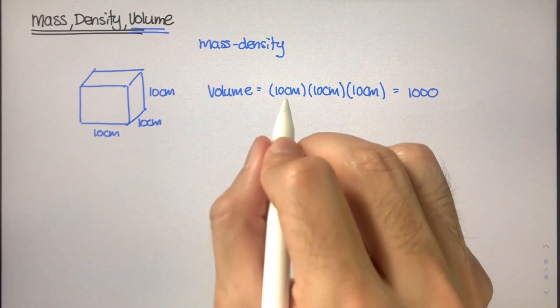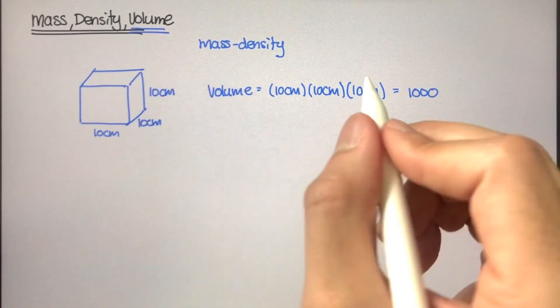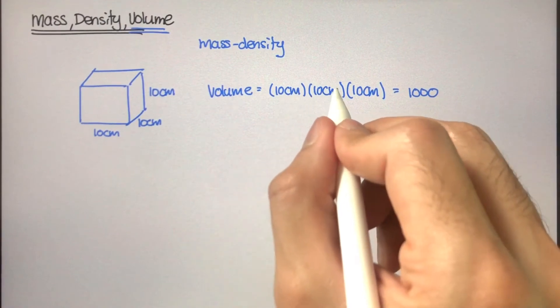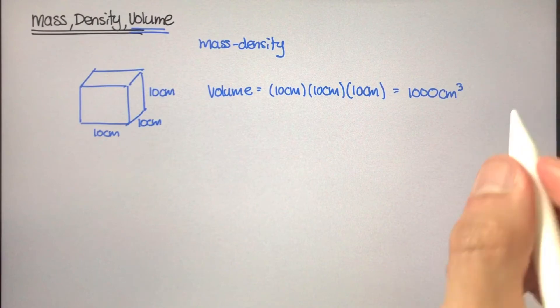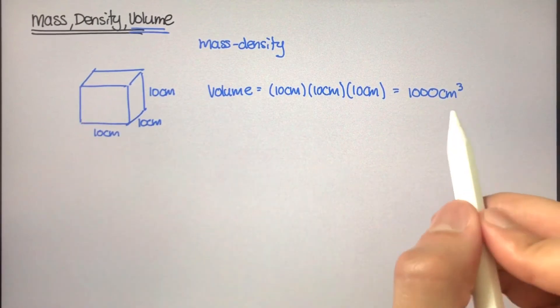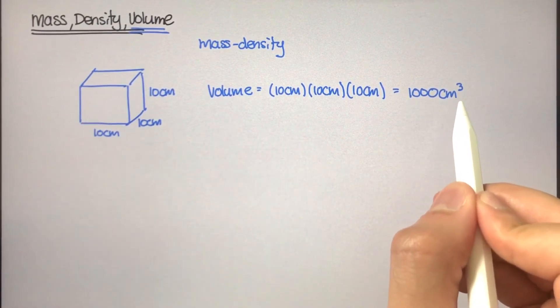And we took this unit of centimeters, which were in length, and now we have centimeters times centimeters times centimeters, so that's centimeters cubed. So the volume of this box is 1000 centimeters cubed.